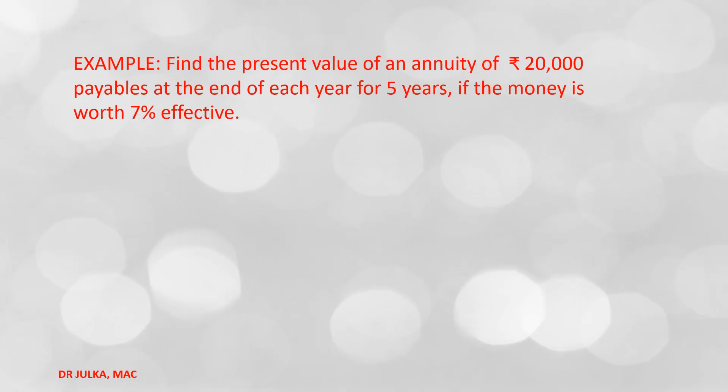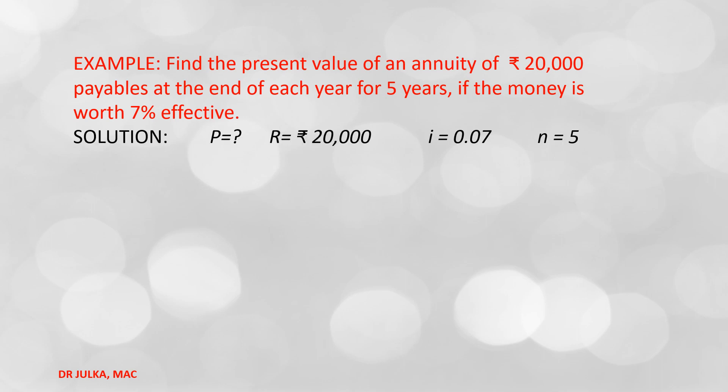Now, some examples on present value of annuity. Find the present value of an annuity of Rs. 20,000 payable at the end of each year for 5 years if the money is worth 7% effective. In this example, annuity amount R = Rs. 20,000, interest rate i = 0.07, number of years n = 5, and we want to calculate the present value P. Present value of annuity = R × [1 − (1 + i)^(−n)] / i.